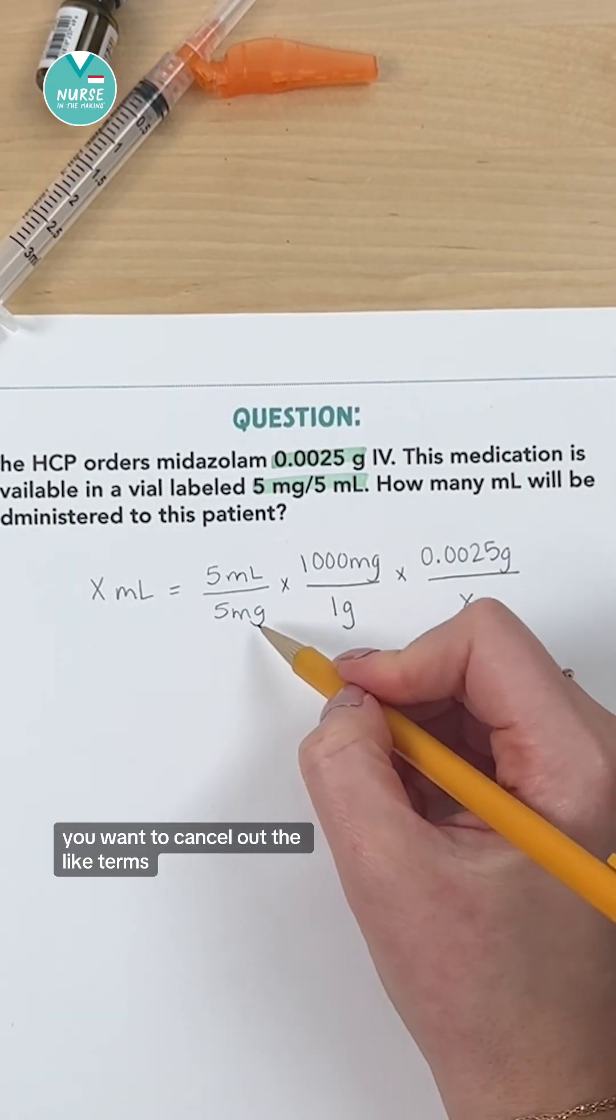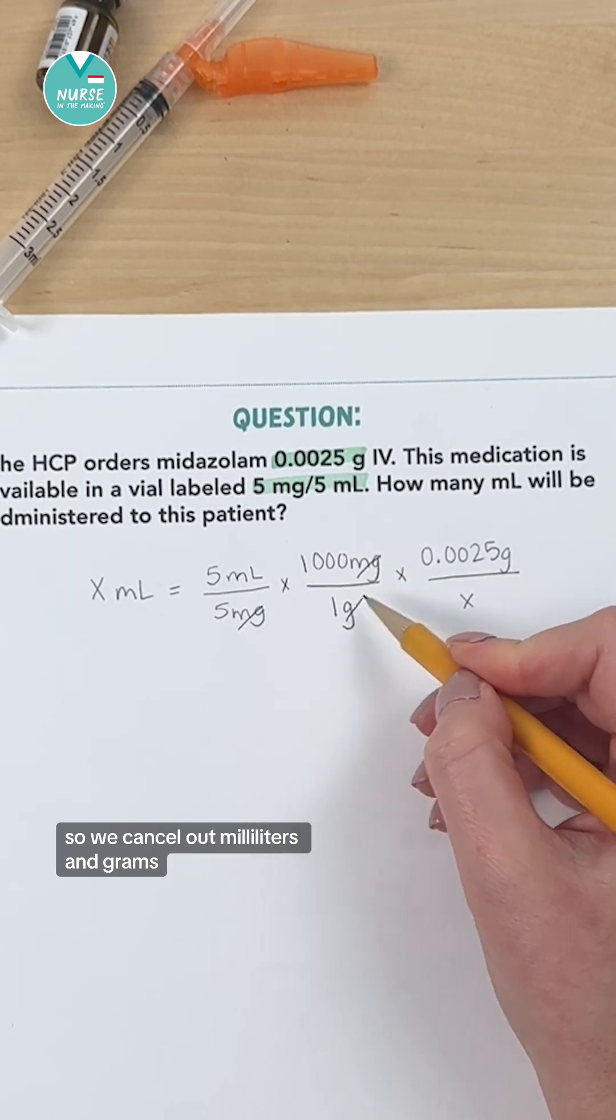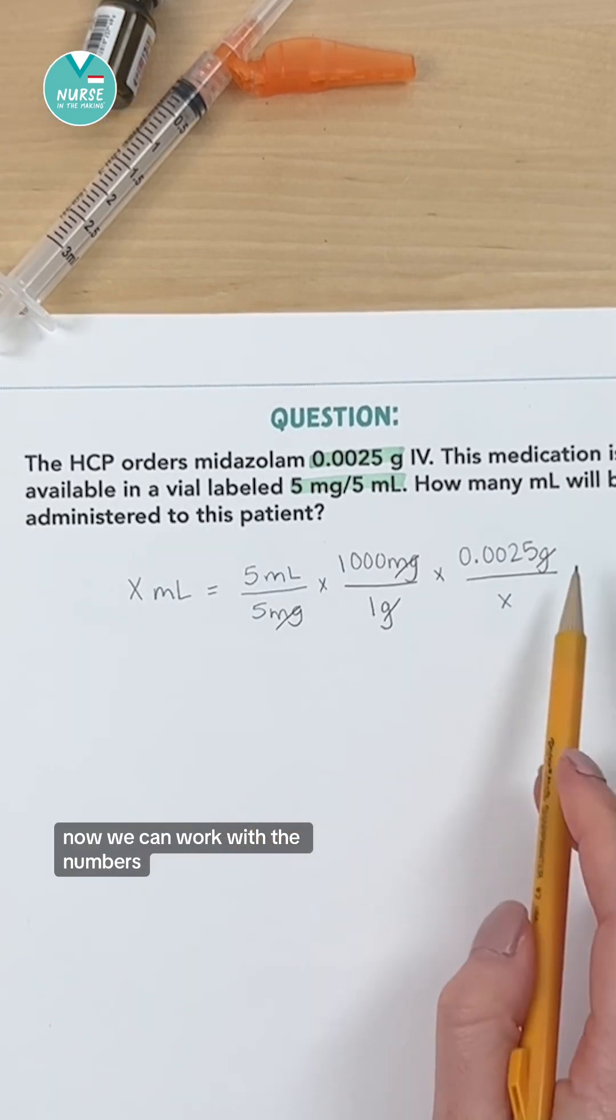You want to cancel out the like terms. So we cancel out milligrams and grams. Now we can work with the numbers.